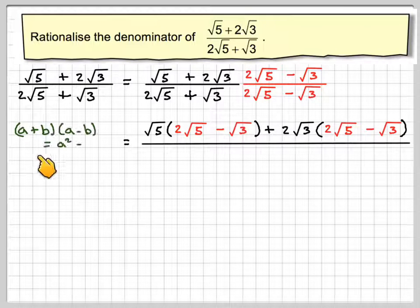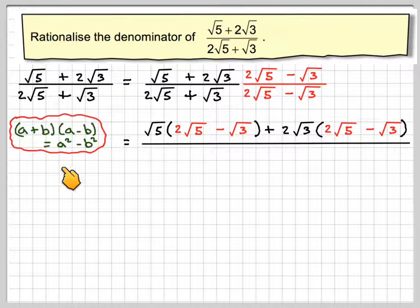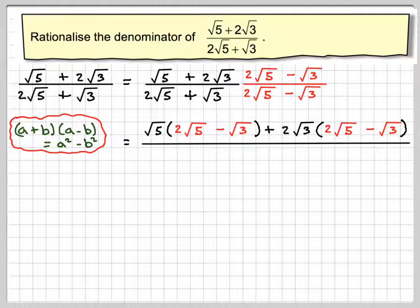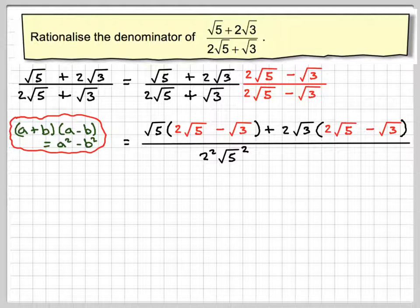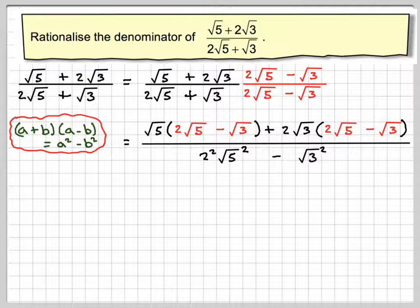On the bottom, we're going to use the idea that a plus b times a minus b is a squared minus b squared. So this would be a, this would be b, or this would be a, or this would be b. So a squared will be 2 squared root 5 squared minus b squared, which is going to be root 3 squared.